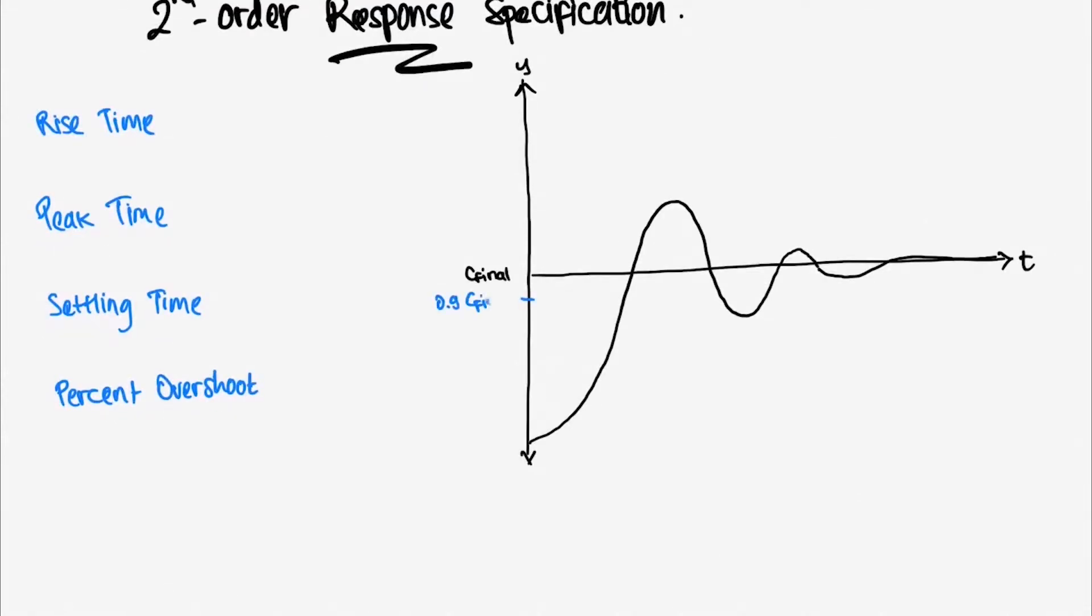The rise time is the time required to move from 10% of its final value to 90% of the final value. Settling time is the time required to reach and stay within 2% of its final value.